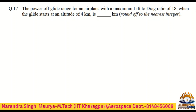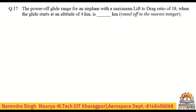This is problem number 17. We will read this problem: the power-off glide range for an airplane with a maximum lift-to-drag ratio of 18, when the glide starts at an altitude of 4 kilometers. This is a fill-in-the-blank and you have to write the answer in kilometers.